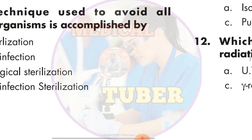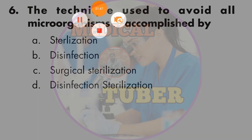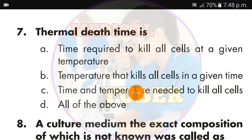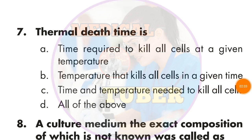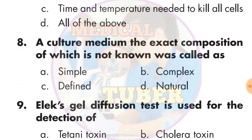Question number 7: Thermal death time — the answer is B — the temperature that kills all cells in a given time is the thermal death time. Question number 8: A culture medium whose exact composition is not known is called —